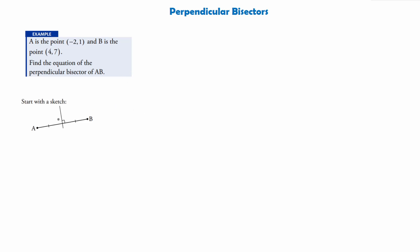Before I begin the first step, I'm going to start with a little sketch so I know roughly what I'm looking for. We've got the line AB: A is the point (-2, 1) and B is the point (4, 7). We've got this perpendicular bisector that we need to work out. From the diagram we can see it cuts the line AB directly in half, passing through the midpoint, and it's perpendicular to AB so it meets at a right angle.